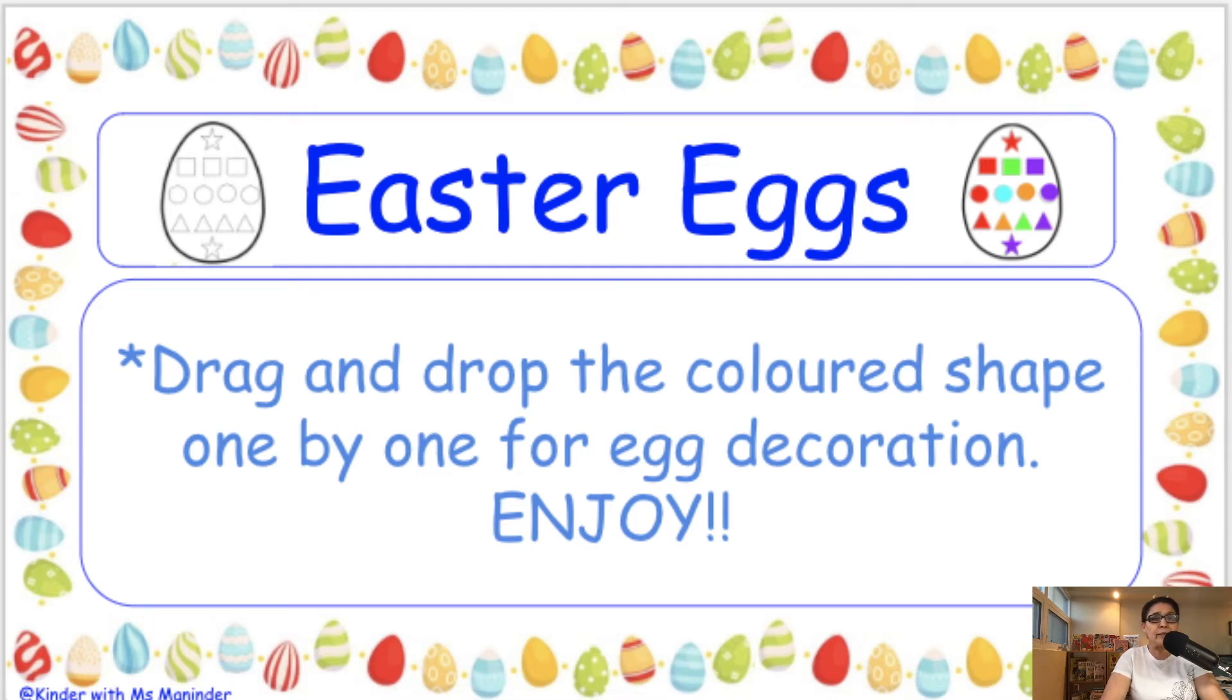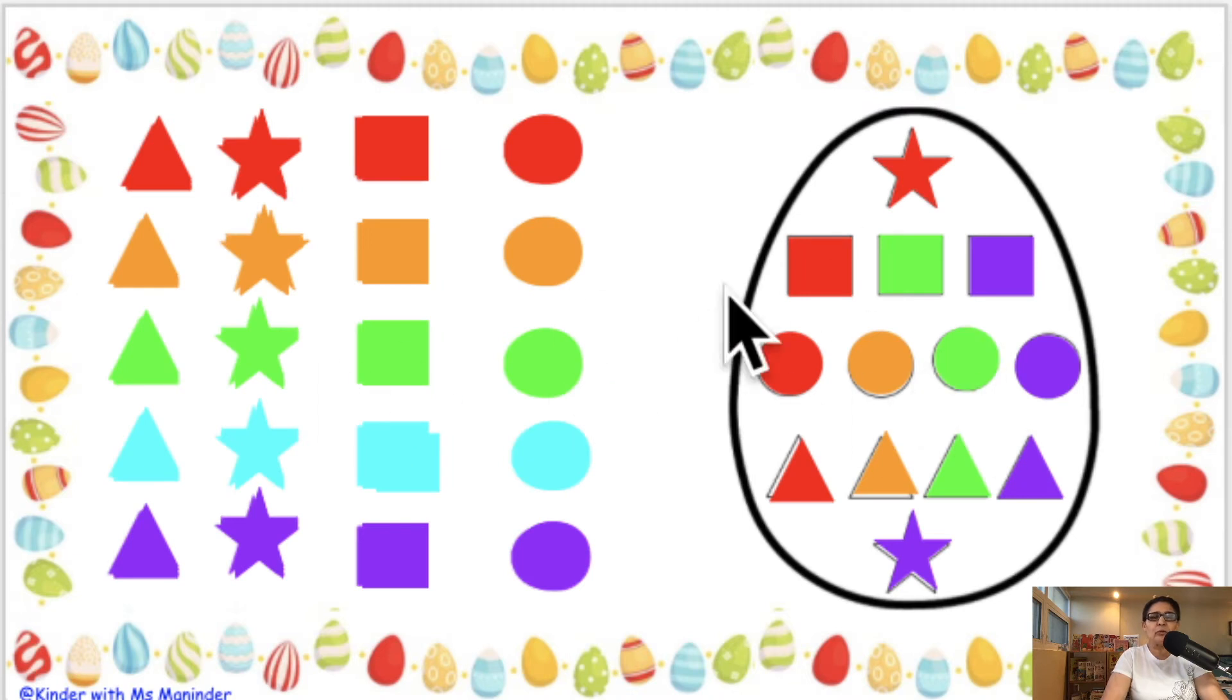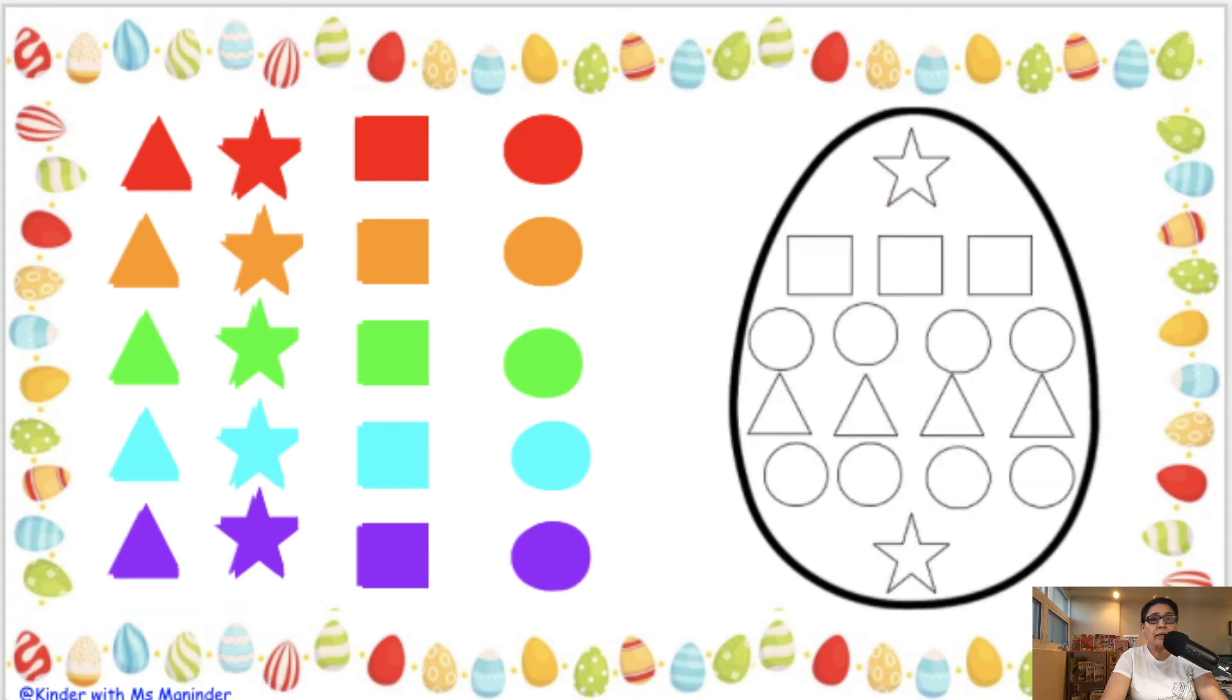It's easy peasy. You just have to drag these shapes onto the egg. This I have done to show you how it looks when it's done. Like this, you get your star, any color.